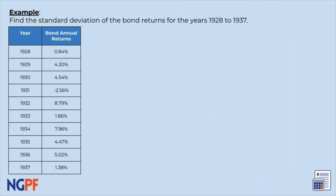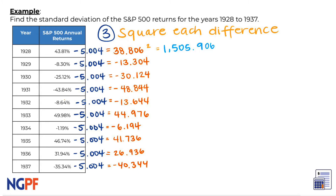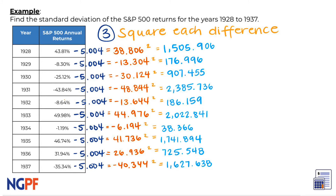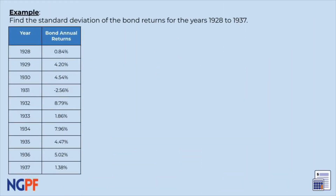Now it's your turn. Find the differences between each of your data points and the mean that you calculated from step 1. For step 3, we must now square each difference that we found in step 2. For the first year, 38.806 squared is equal to 1505.906. For the second year, negative 13.304 squared is equal to 176.996. I will now complete the step for the rest of the data points. Now you try — square each of your values from step 2 and write those in a new column.